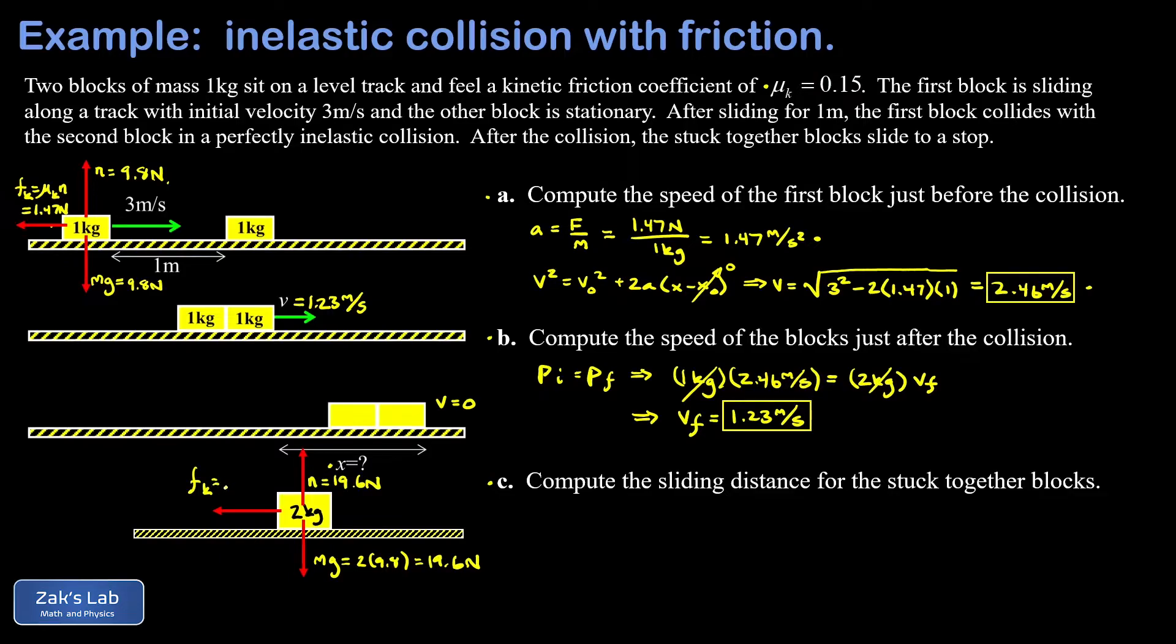And our friction force again is the coefficient of kinetic friction multiplying the normal force, which is now twice as much as it was before. So our friction force has doubled simply because our mass has doubled. It's now 2.94 newtons.